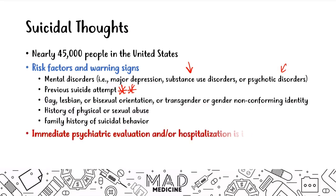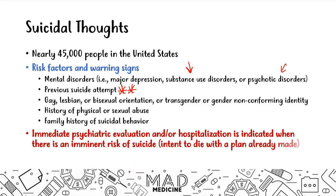Immediate psychiatric evaluation or hospitalization is indicated when a patient says they have a plan to kill themselves. When they have intent to die with a plan, you have to intervene — this is classified as a psychiatric emergency. For example, on a test bank question, a patient who stated he planned to kill himself on the anniversary of his wife's death required immediate hospitalization. If a patient confirms suicidal thoughts, has a specific plan, and you ask about it — you must ensure psychiatric evaluation is done before letting the patient go.